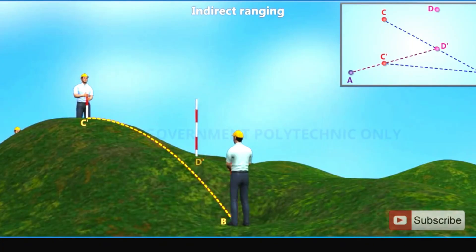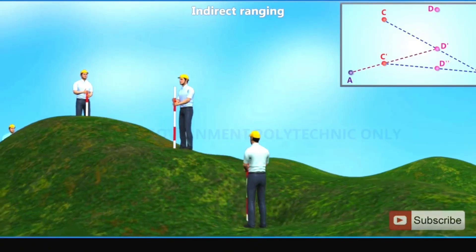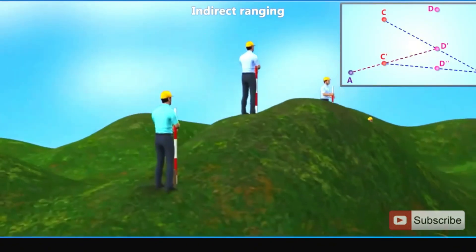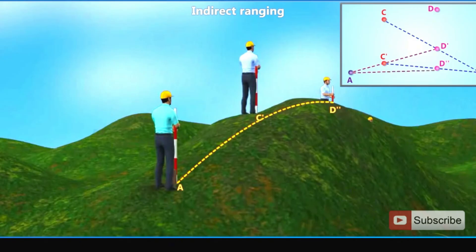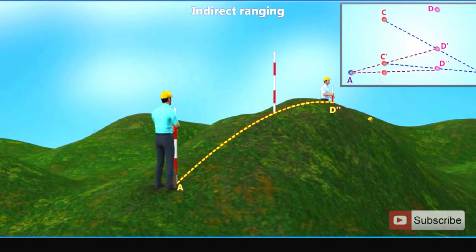D'' lies in straight line BD''C'. Similarly, range station D'' from station A and adjust station C' to new position C'' which lies in straight line AC''D''.